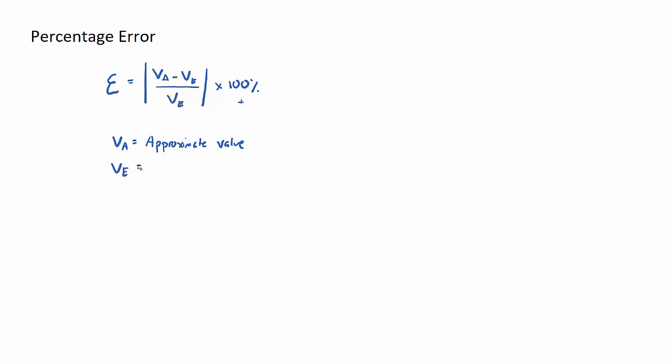As opposed to VE, which is our exact value. Usually in IB Studies questions, we get the exact value through doing a calculation, then a follow-up question will be: David estimated the quantity was this, so therefore determine his percentage error. So let's just do a quick example.